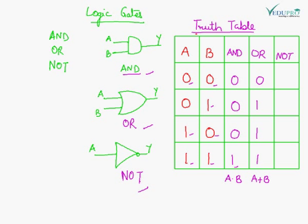So for the OR gate, A plus B is the operation. For the NOT gate, there is only one input, which can be zero or one.